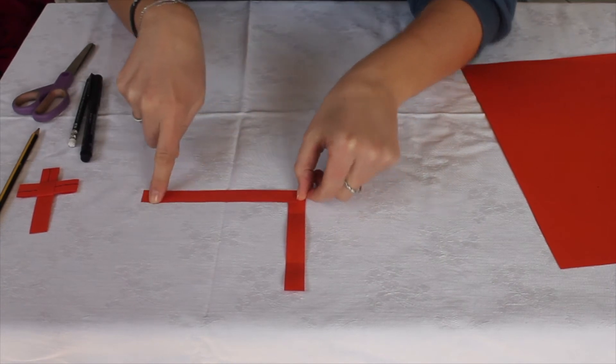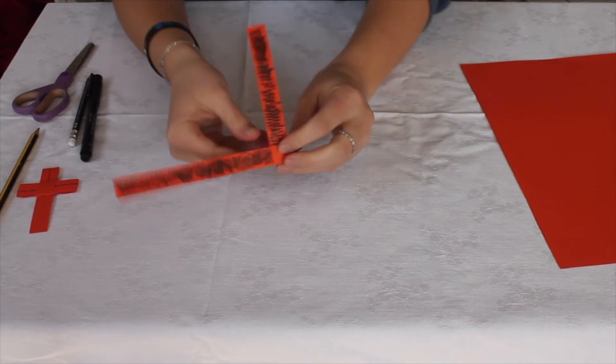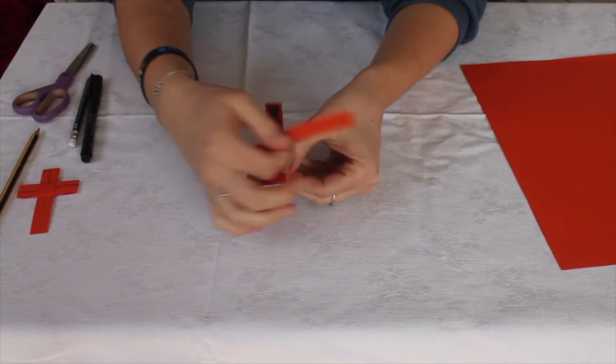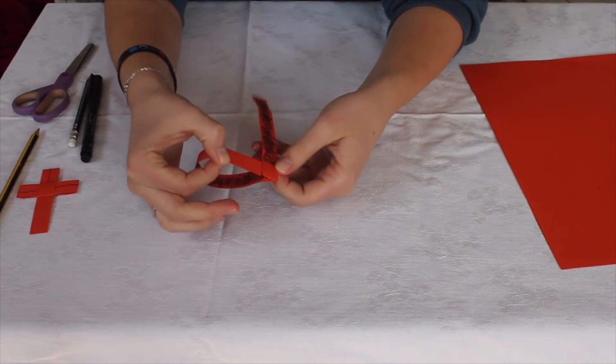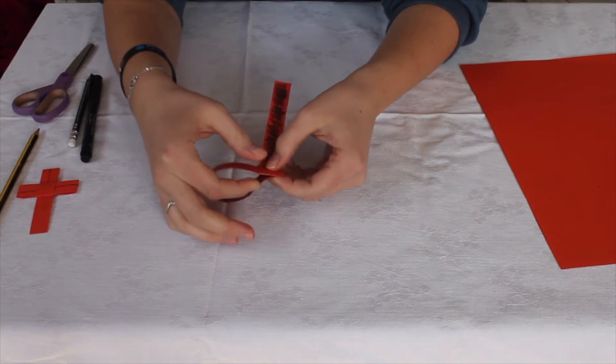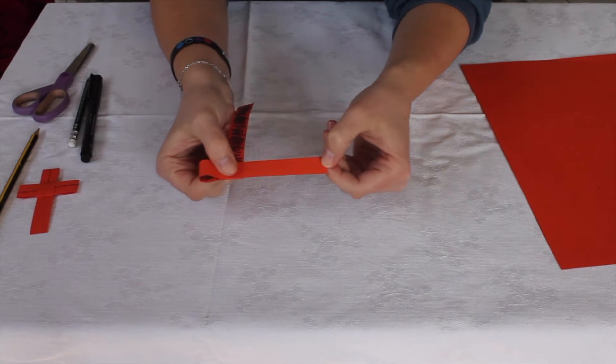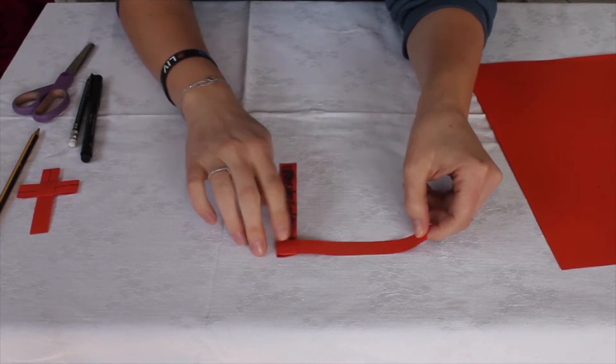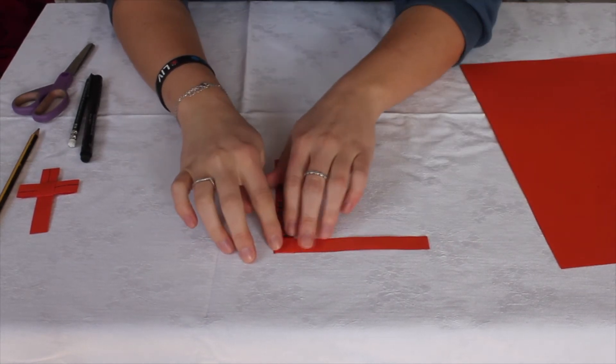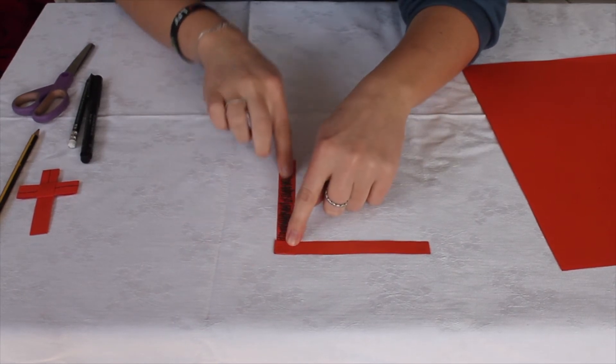So you're going to take this strip and fold it back but this time instead of going straight across we're going to fold it through the pocket that we've made like so and just pull it so it comes all the way through. So we've still got our right angle here.